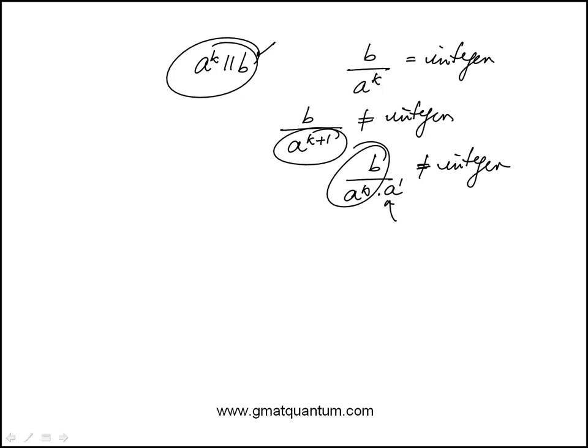So that's the interpretation. But here we're told that 2 to the k parallel, I'm just going to call the symbol parallel 72, which means that 72 over 2 to the k is an integer. But 72 over 2 to the k plus 1 is not an integer. The question is what is k equal to?